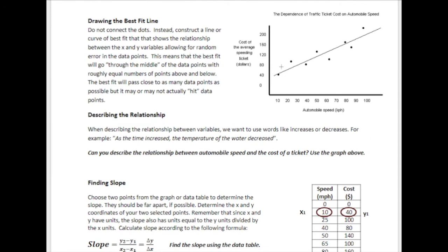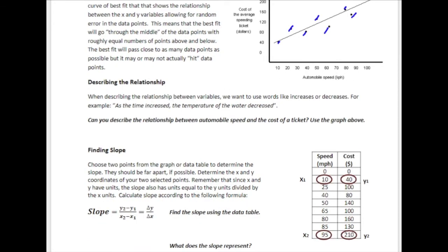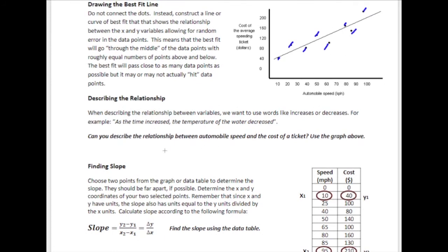Now let's talk about drawing the best fit line. After plotting your data — especially for handwritten graphs — you want to draw a line that goes through most of the data points with an approximately even number of points above and below the line. After graphing we should be able to describe the relationship. Looking at this graph: as automobile speed increases, the cost of the average ticket also increases.